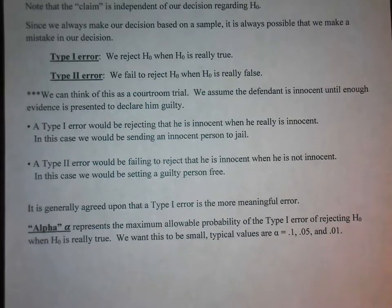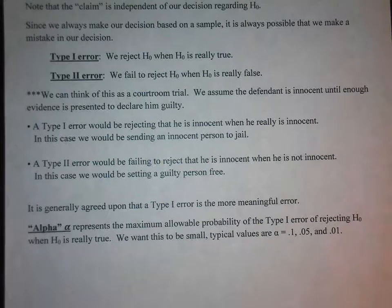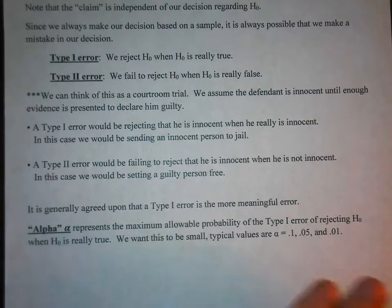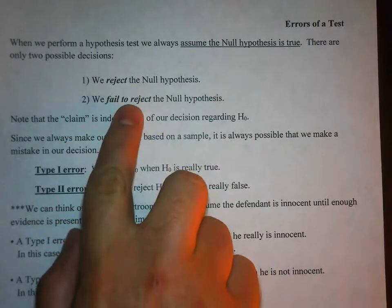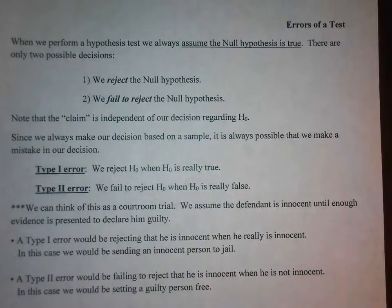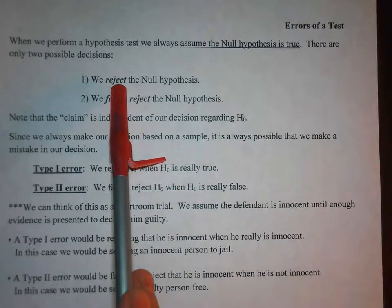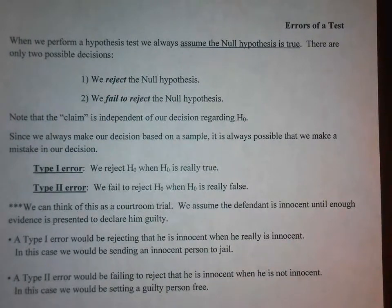Alpha is the maximum allowable probability of the type 1 error, and .1, .05, and .01 are very common values for alpha. The reason we're talking about this is that we're either going to reject the null hypothesis or fail to reject it. How willing we are to make a type 1 error is going to play into whether we reject the null hypothesis or not. That's why the error of a test is very important.